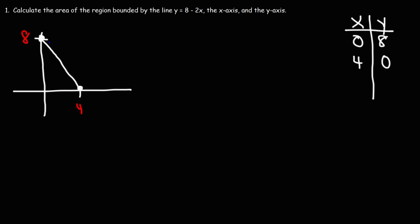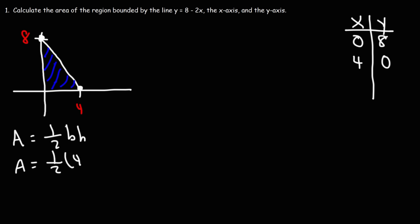We want the area between this line, the x-axis, and the y-axis. One way is through geometry: the area of a triangle is one-half base times height. The base is 4, the height is 8, so one-half times 4 times 8 equals 16. That's the area of the shaded region.